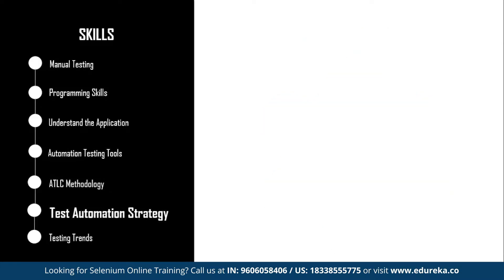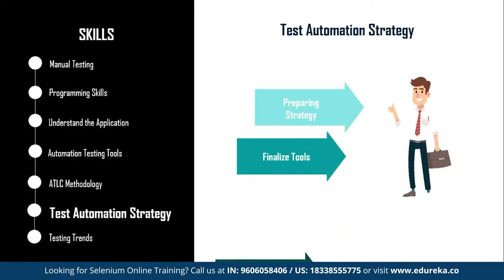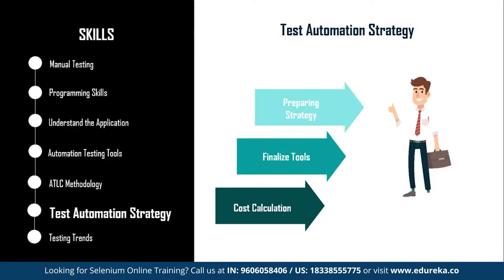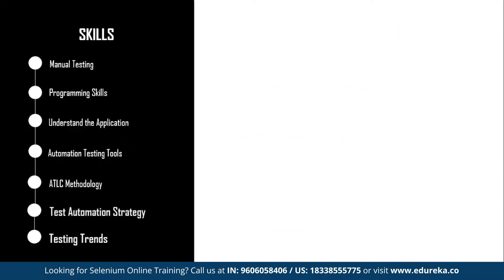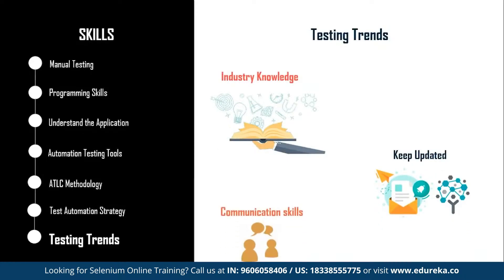Moving on, the next step is test automation strategy. Once you are through with the ATLC methodology and automated testing tools, you are well prepared to create your test automation strategy for your clients or employer. To become a great automation test engineer, you would initiate by preparing the test automation strategy, finalizing the tools, and calculating overall cost and ROI. Automation strategy creation is considered very crucial as you need to define the path to reduce manual testing hours and justify the ROI for clients. The final skill is to stay updated with testing trends — the most trending best practices, tools, techniques, tips, and tricks will help you optimize your test automation strategies.